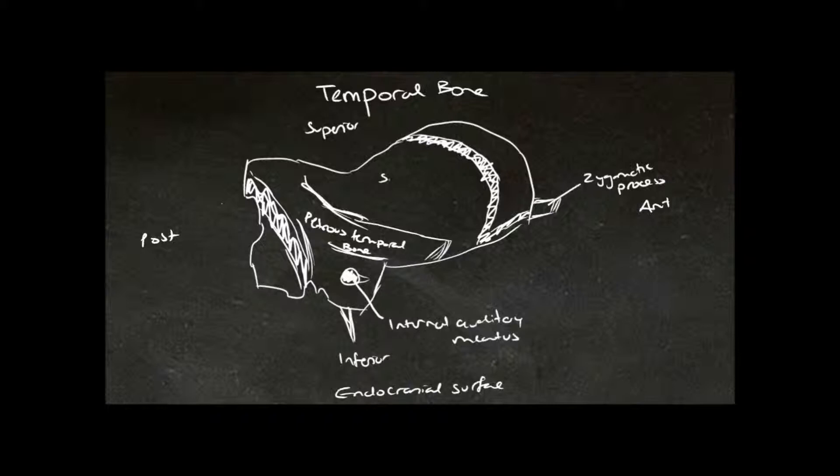Here we have the squamous temporal bone and a groove for the middle meningeal artery. Back here we have another part of the sigmoid sulcus, which was also found on our parietal bone.